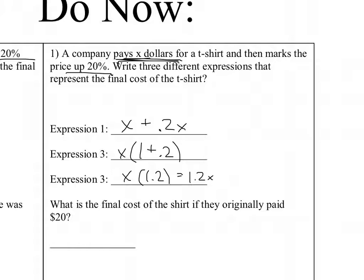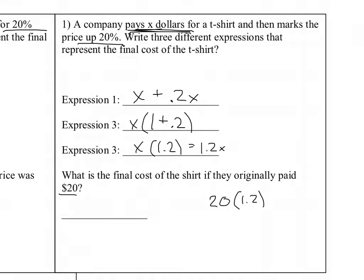Looking at this, it tells us originally they paid $20 for it, so that's 20 times 1.2, and when we do that multiplication, we're going to get $24.